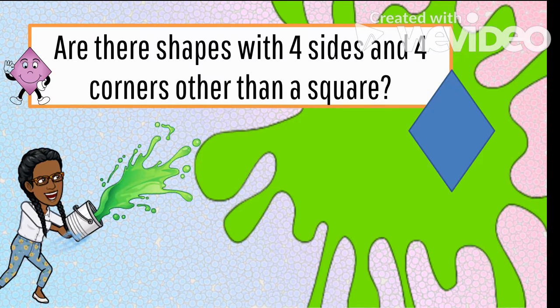Hmm, I wonder. Are there shapes with four sides and four corners other than a square? We did name another one. But come on. I want you to think of some more.